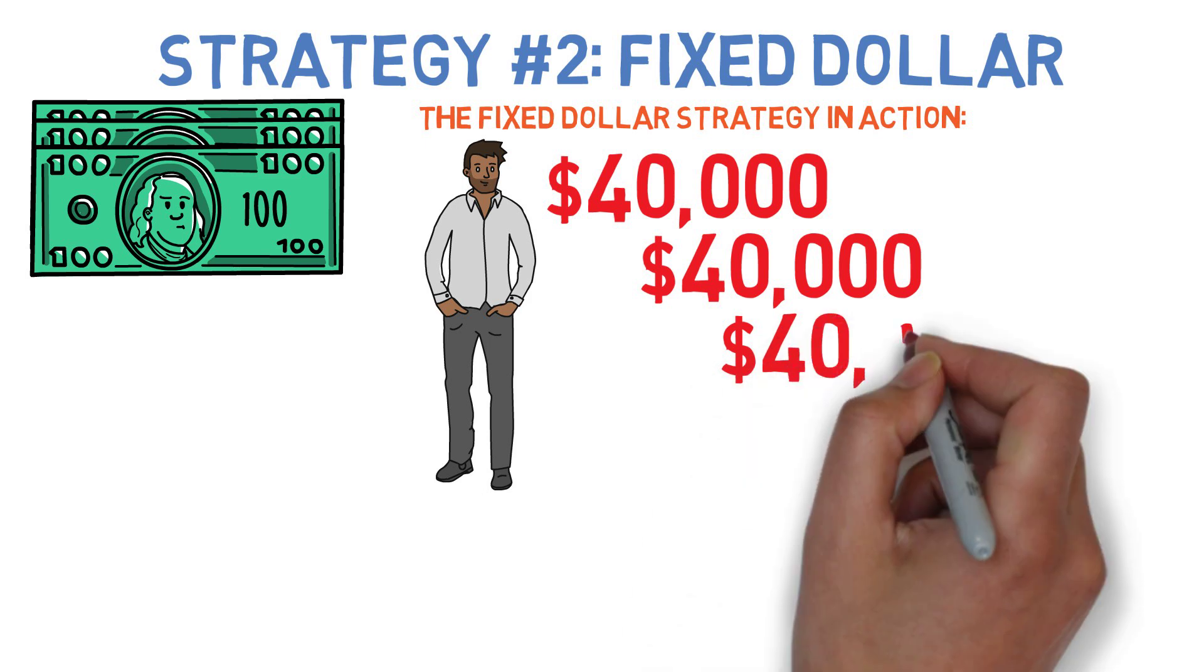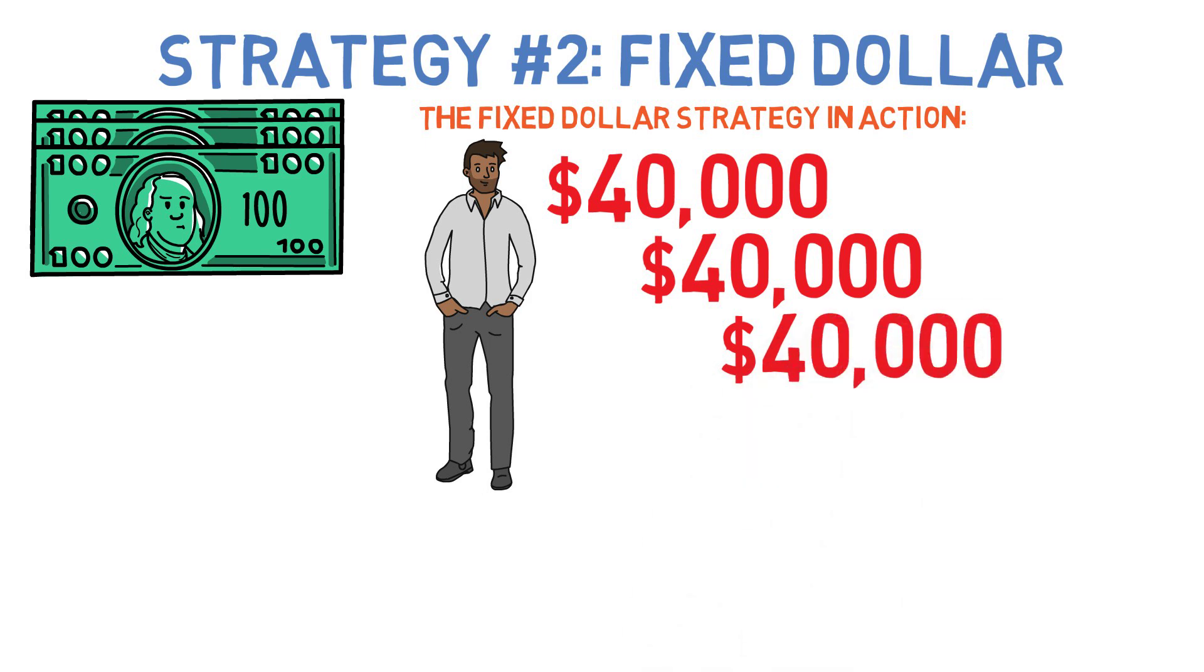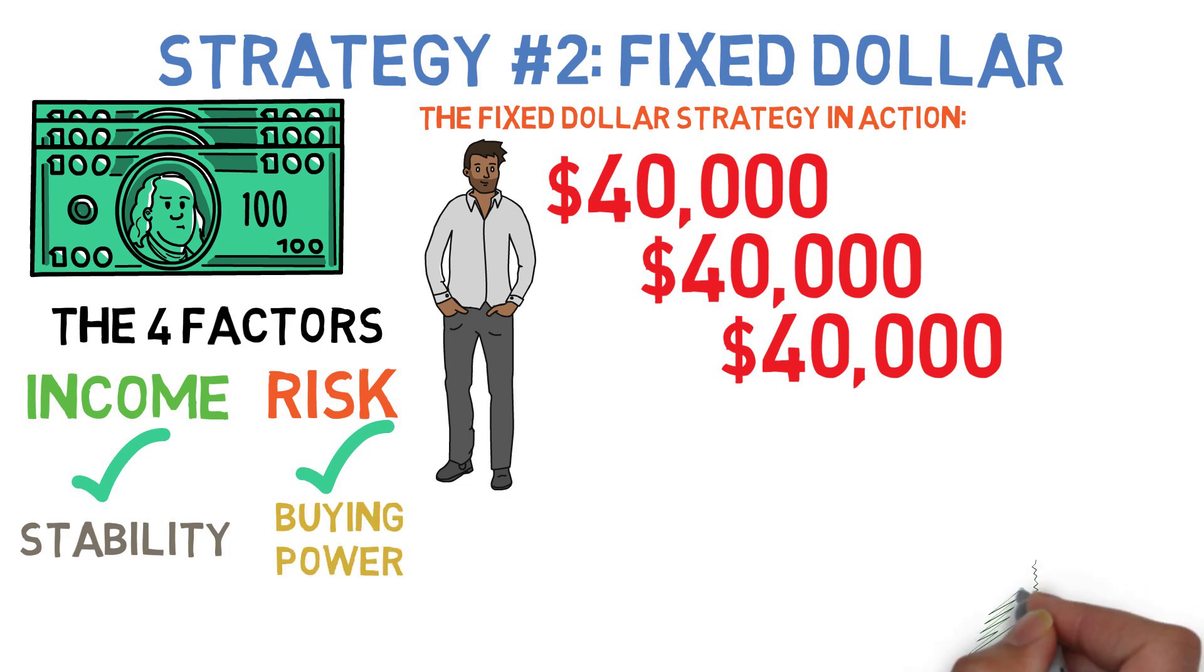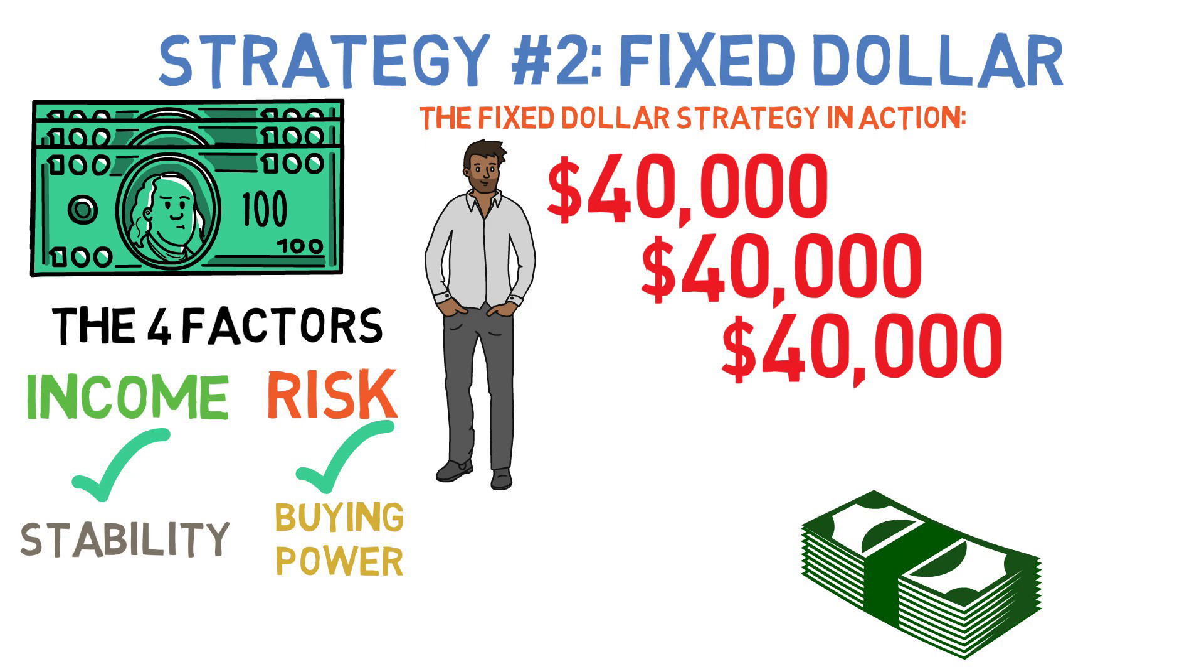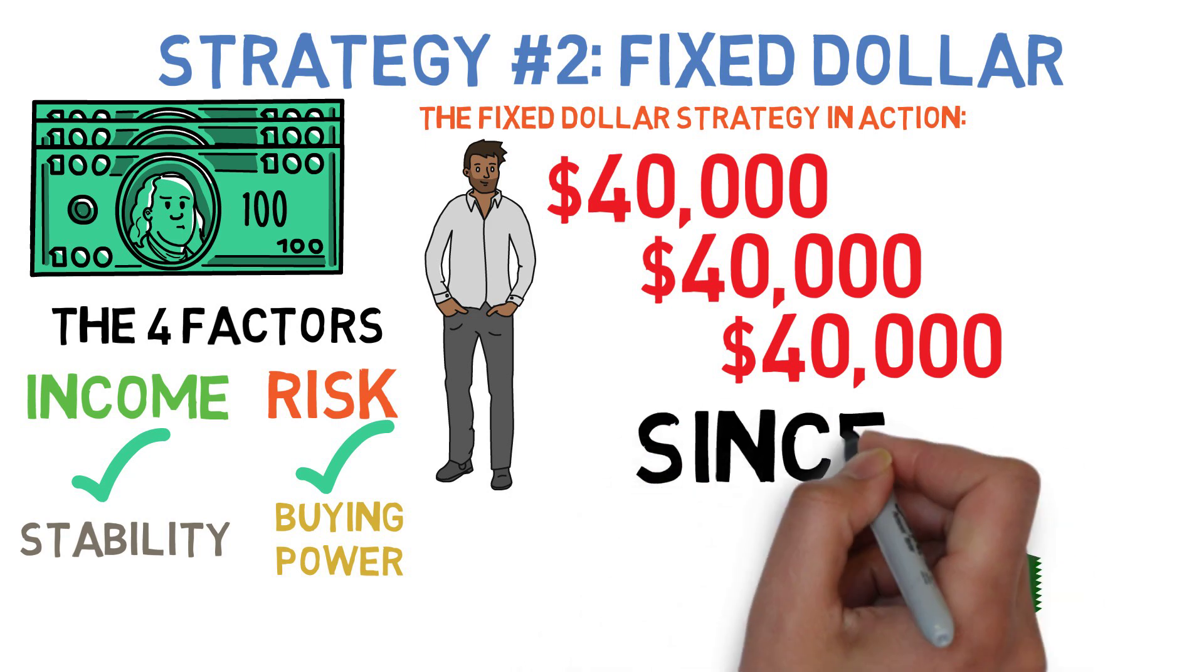When it comes to the four factors of retirement compared to the 4% rule this strategy is generally a little stronger on the income and risk side of things while suffering a little more in the stability and buying power categories. The reason for this is that as long as your initial withdrawals are not too high you're very unlikely to outlive your money on this strategy and you may be able to live at a higher standard of living, at least initially, than you otherwise would have under something like the 4% rule.